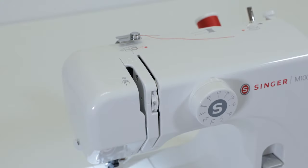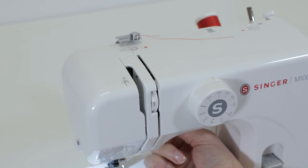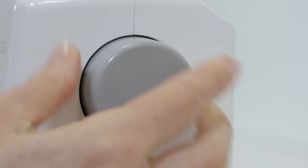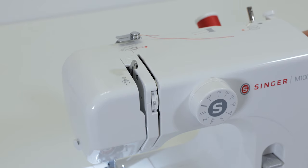Now that our bobbin is threaded and inserted, now we can thread the top of the machine. First thing you're going to do to thread the machine is raise your presser foot lifter. It's very important that you raise the presser foot lifter before you start threading. And the other thing you're going to do is turn your hand wheel toward you so that the take-up lever is visible at the top of the machine. If you had just wound a bobbin, the thread is still sitting in the bobbin winding tension disc, so we're going to remove it.